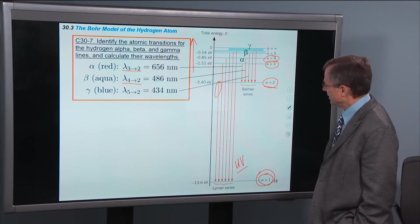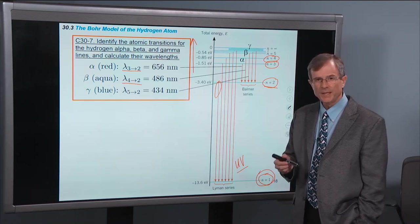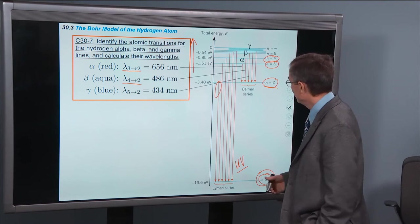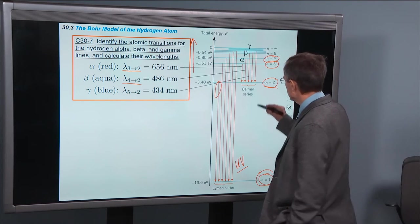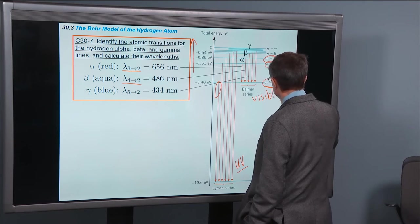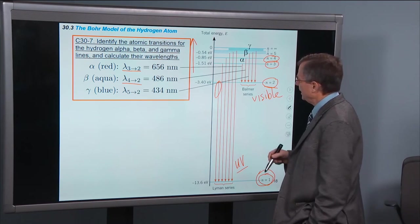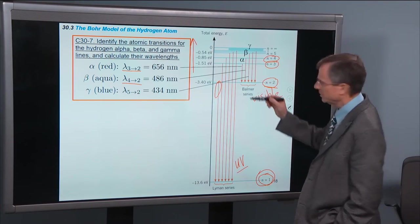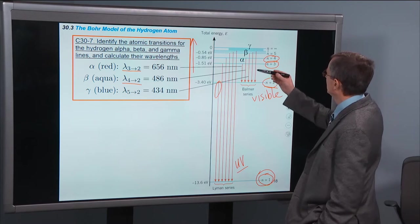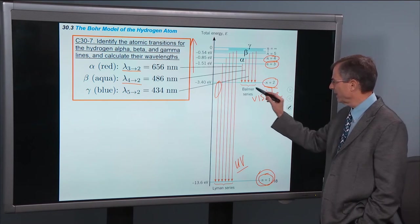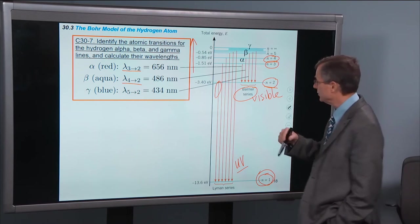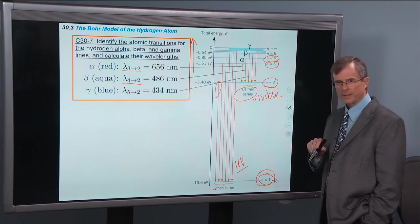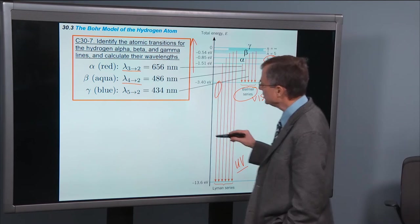The Balmer series gives three, and in some cases people think they can see the fourth line. I've never been able to see it. But at least three visible lines. So these are visible. And the three that we have actually demonstrated for you are the 3 to 2, that's the hydrogen alpha, 4 to 2. All of the Balmer lines end up with n equals 2 as the final energy level. And then 5 to 2 for the gamma line.